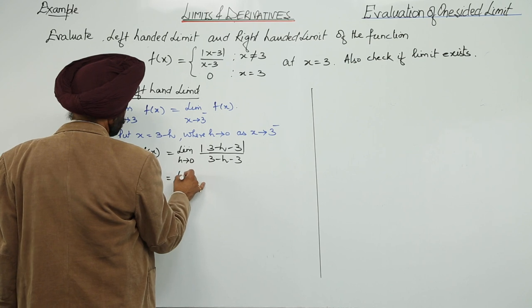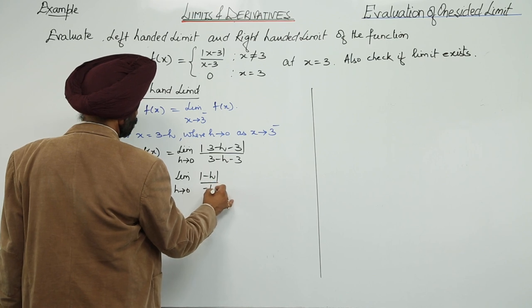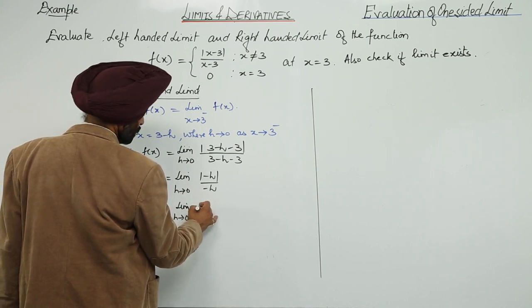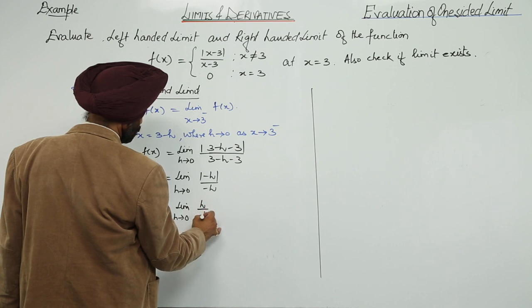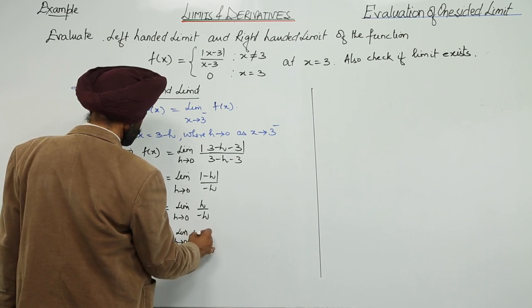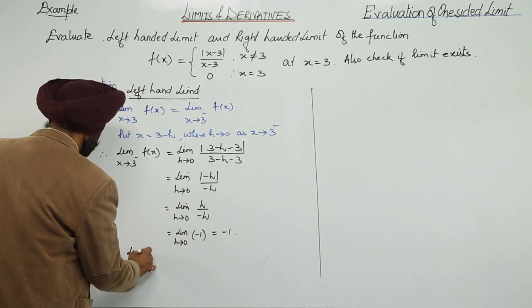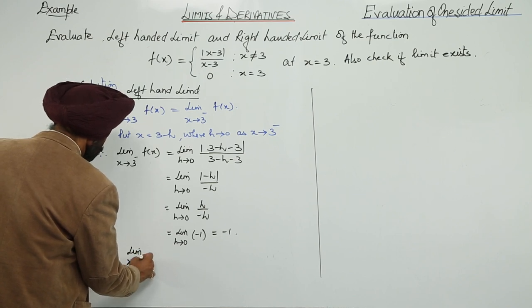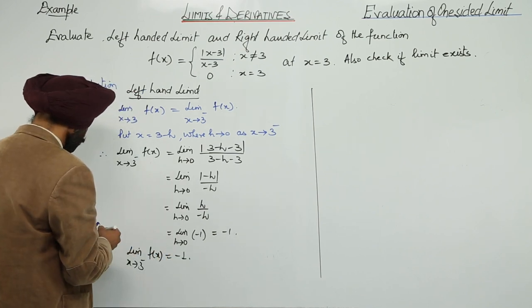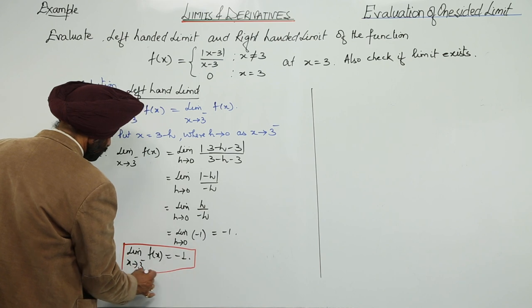This becomes limit as h approaches 0 of |−h| upon (−h), which equals limit as h approaches 0 of h upon negative h, which simplifies to minus 1. So the left-hand limit of f(x) as x approaches 3 is equal to negative 1.